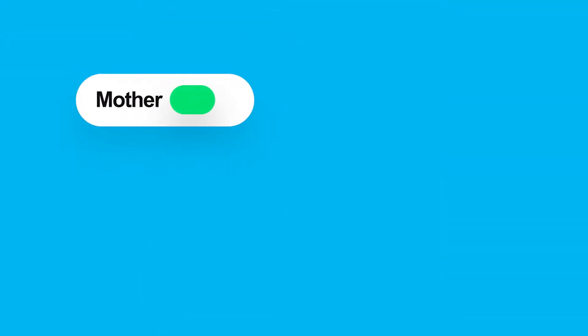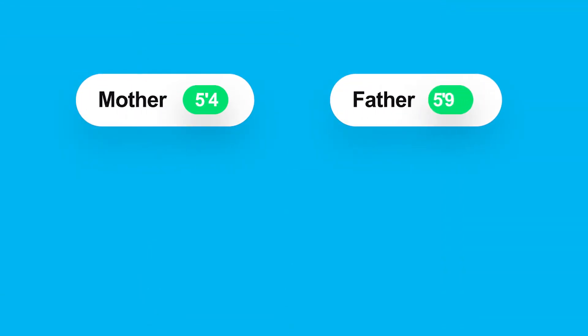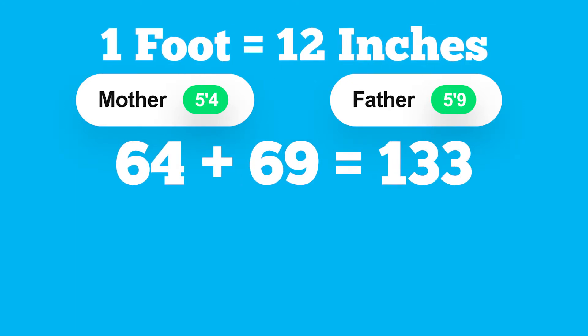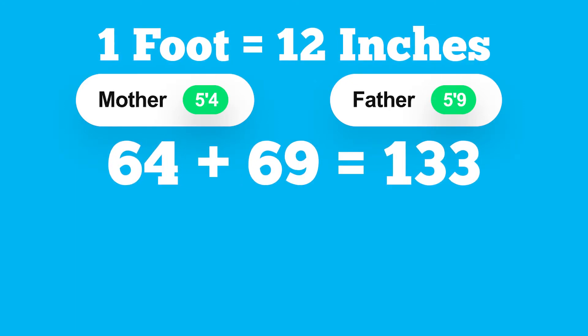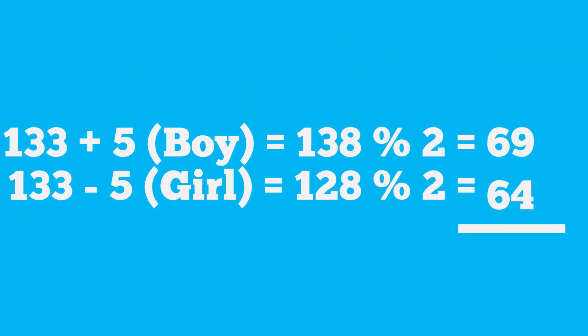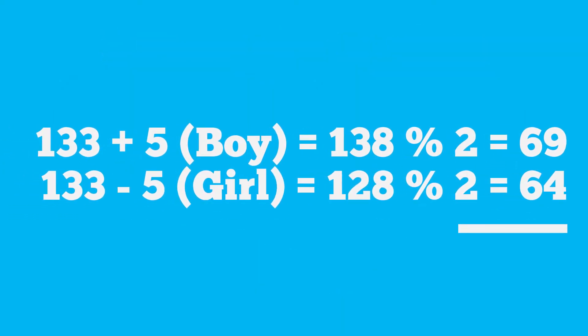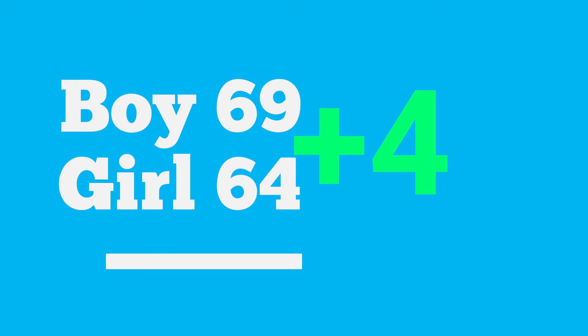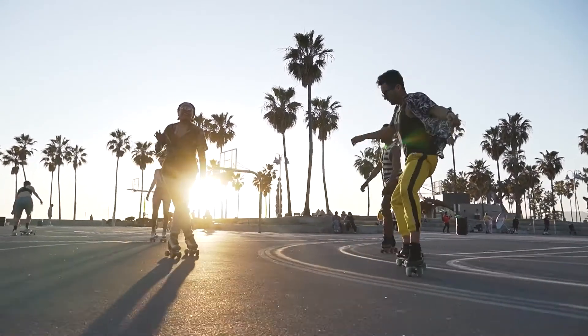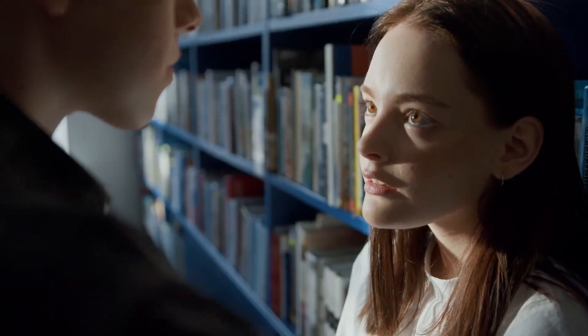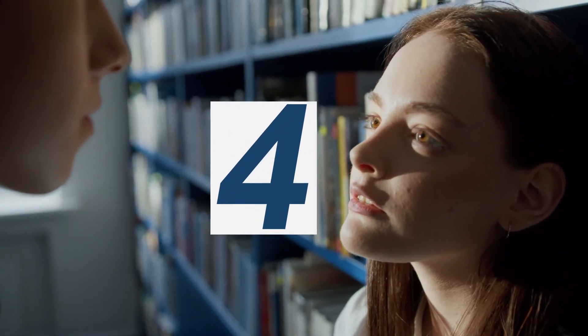Let's say your mother is 5'4" and your father is 5'9". Adding them together: 5'4" equals 64 inches, and the total comes to 133 inches. Then if you are a boy, you add 5 inches; if you are a girl, you subtract 5 inches. Either way, you divide by 2 to get your predicted height. This is your final number, but you can be 4 inches taller than that, because genetics is not the only factor that determines your height. Your height can differ up or down within 4 inches after accounting for the overall genetic factor.